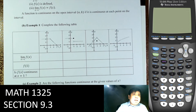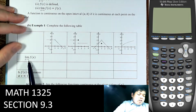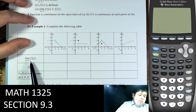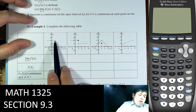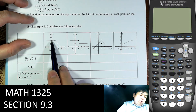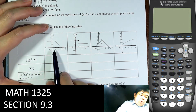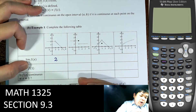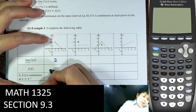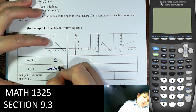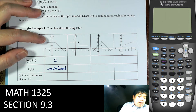Let's look at the first example. We have this graph — what is the limit of the function when x goes to 1? When x goes to 1, the y values go to this point, which is y = 2. And what is the value when x equals 1? Well, at x = 1, the function is undefined — so there's none here. And is the function continuous at x = 1? That would be no.